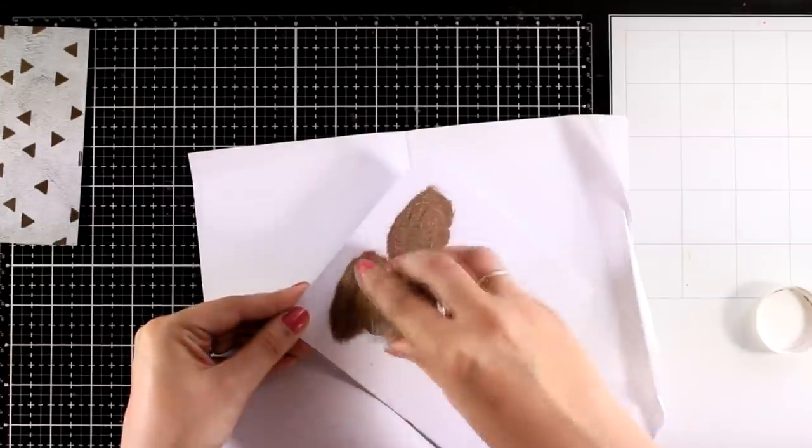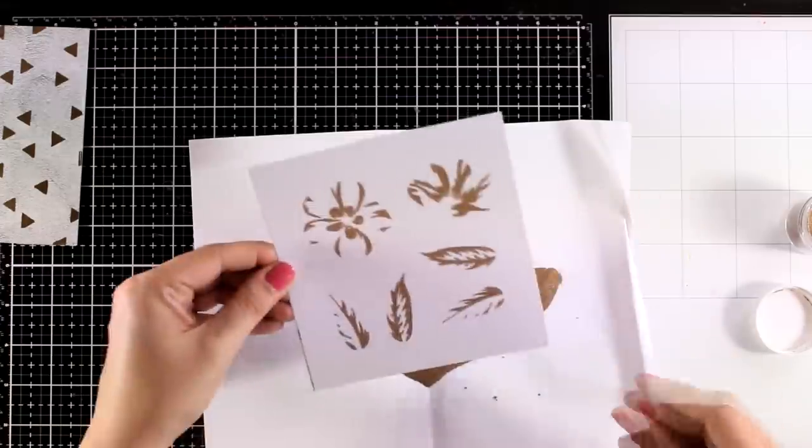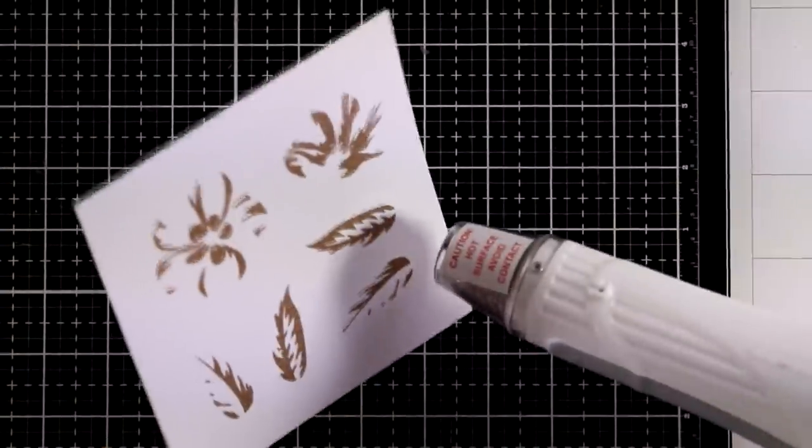And then I'm going to apply on top embossing powder. I went with a gold embossing powder by Altenew. This is actually a rose gold. And now I'm going to use my heat gun and melt the embossing powder.